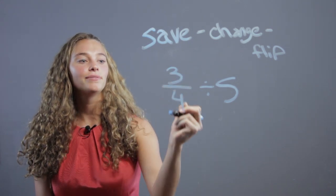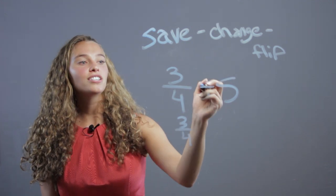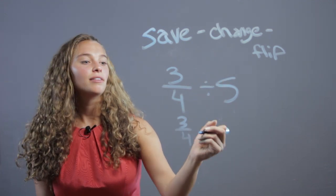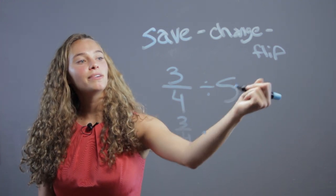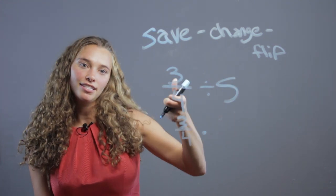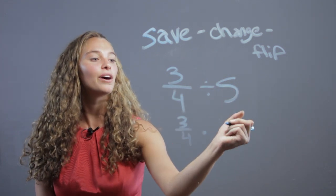The first thing, you save the 3 fourths. Then you change the symbol. Divided becomes multiplication. And then you flip the last number, the 5. Flipping means just making its reciprocal. So the reciprocal of 5 is 1 fifth.